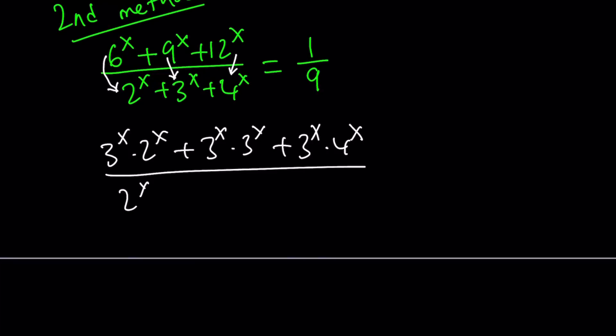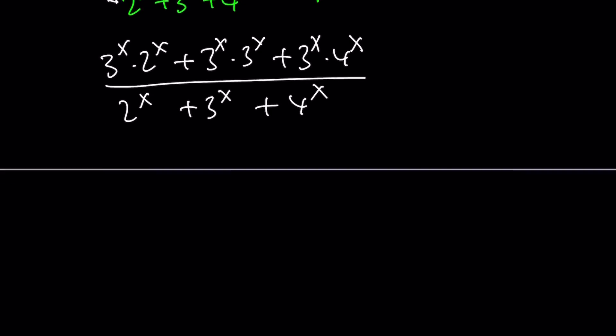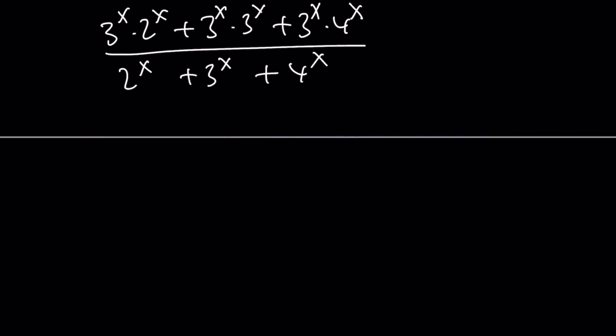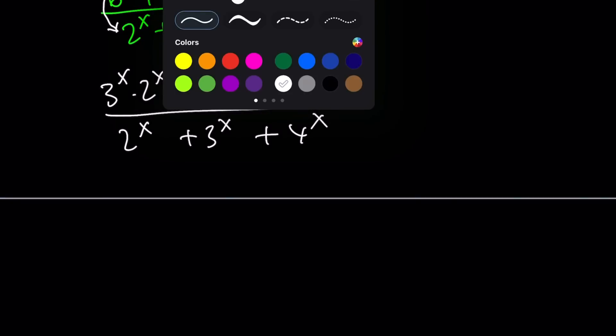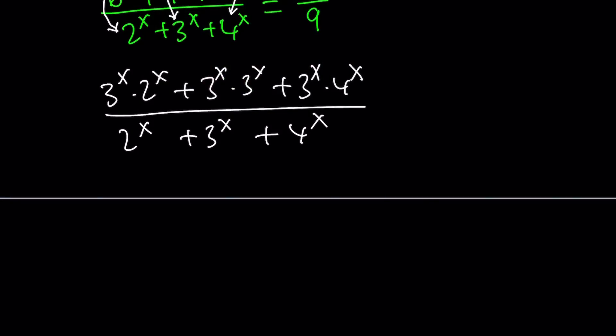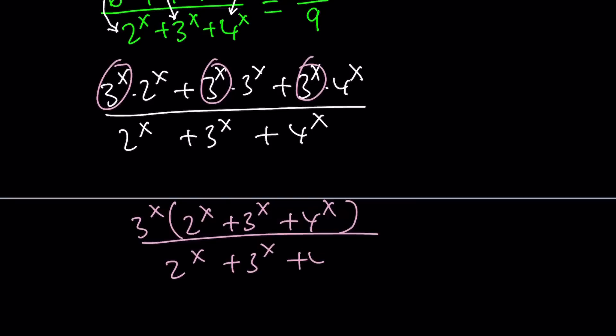Without making any substitution, let's just do this, and let's simplify the left-hand side, and we're going to set it equal to 1 9th. So now, notice that 3 to the x is a common factor for all of these, so we're going to take that out, and then we get 2 to the x plus 3 to the x plus 4 to the x, divided by 2 to the x plus 3 to the x plus 4 to the x, and that is equal to 1 9th.